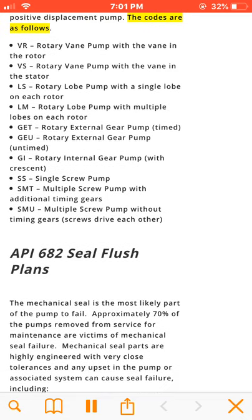The API 676 rotary pump codes are as follows: VR — rotary vane pump with the vane in the rotor; VS — rotary vane pump with the vane in the stator; LS — rotary lobe pump with a single lobe on each rotor; LM — rotary lobe pump with multiple lobes on each rotor; GAT — rotary external gear pump, timed; GAU — rotary external gear pump, untimed; GI — rotary internal gear pump with crescent; SS — single screw pump; SMT — multiple screw pump with additional timing gears; SMU — multiple screw pump without timing gears, screws drive each other.